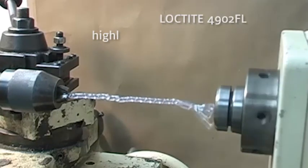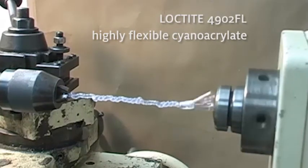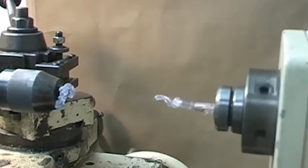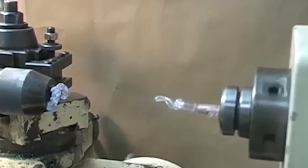With Loctite 4902-FL, after more than 30 rotations, the tube or substrate breaks, yet the adhesive bond line remains intact.